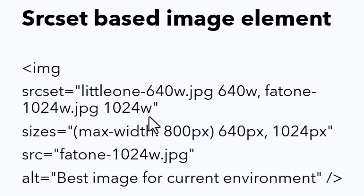You might be wondering why we have the src attribute in the image element. Source set is a newer attribute and many older browsers simply don't support it. As a fallback, you specify the src attribute as well, so if a browser which does not recognize source set is parsing the image, it would load the image mentioned in src rather than just showing the alt text.